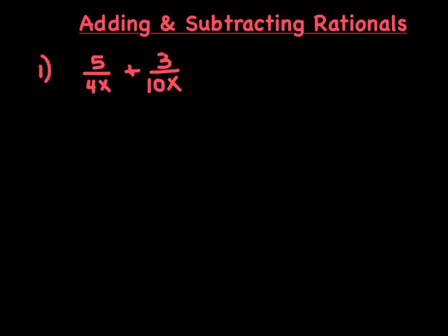Let's take a look at adding and subtracting rational expressions. When you add and subtract fractions, the first thing you want to do is find a common denominator. So if we look here, we have a 4x and here we have a 10x.